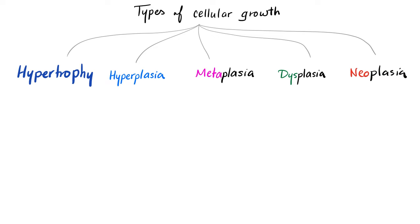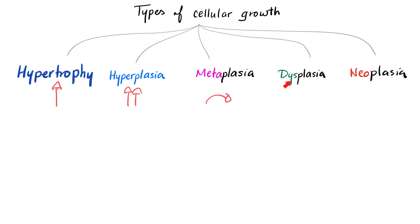Hypertrophy is an increase in the size of the cell. Hyperplasia is an increase in the number of the cell. Metaplasia is when you change one type of tissue to another type of tissue in the same category — from epithelium to another epithelium, or from connective to another connective tissue. But epithelium cannot jump to connective tissue.